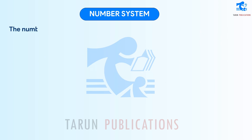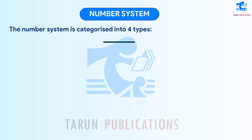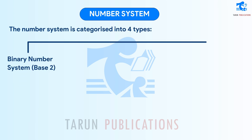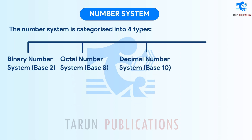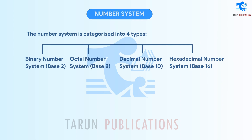The number system is categorized into four types: Binary number system, base 2; Octal number system, base 8; Decimal number system, base 10; and Hexadecimal number system, base 16.